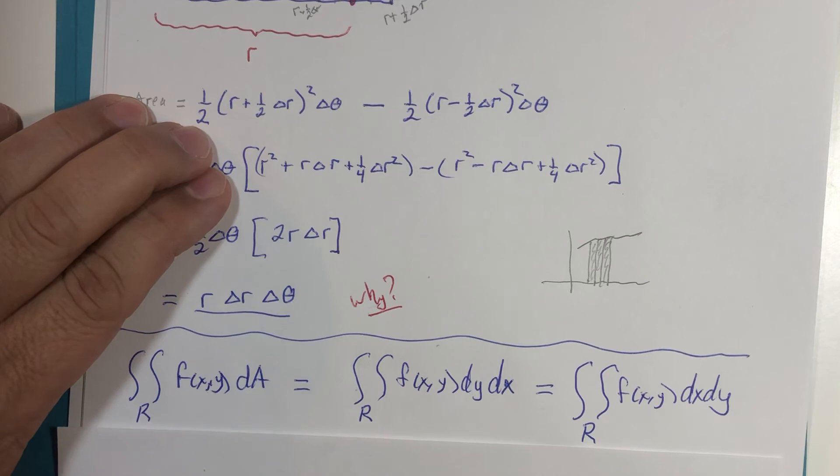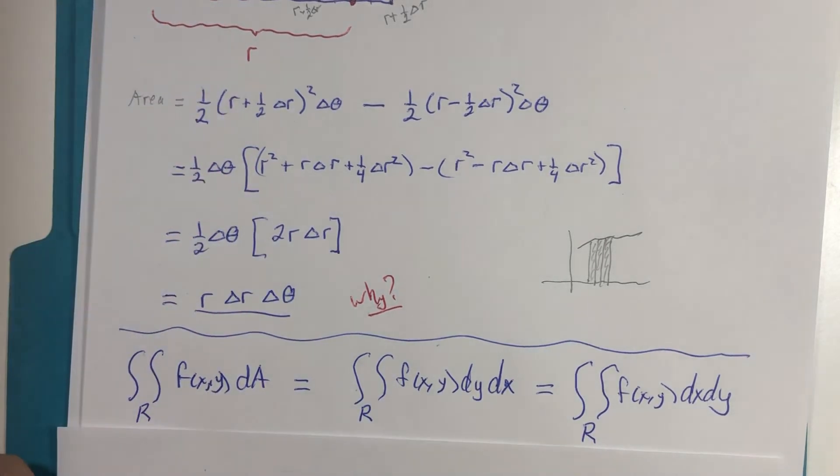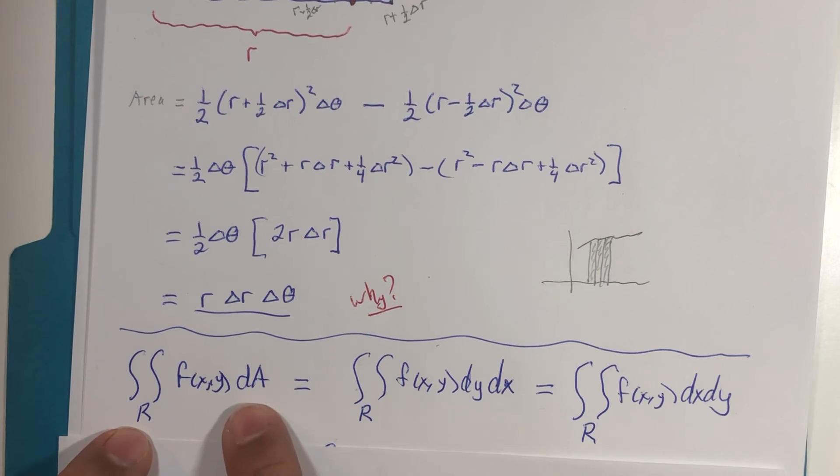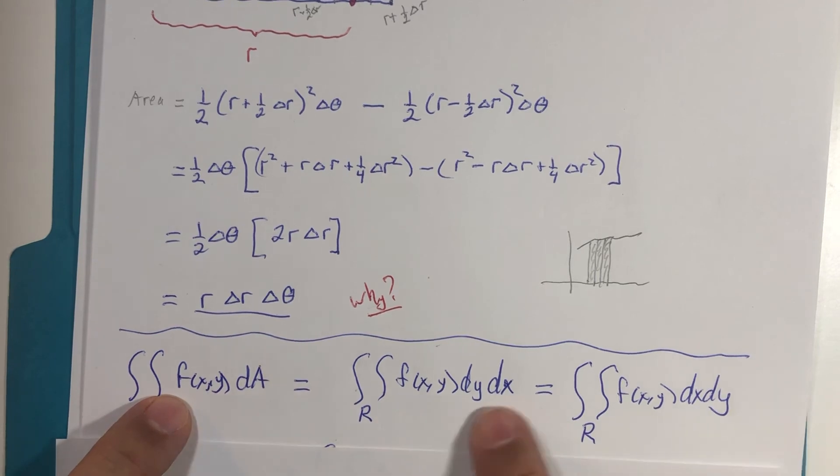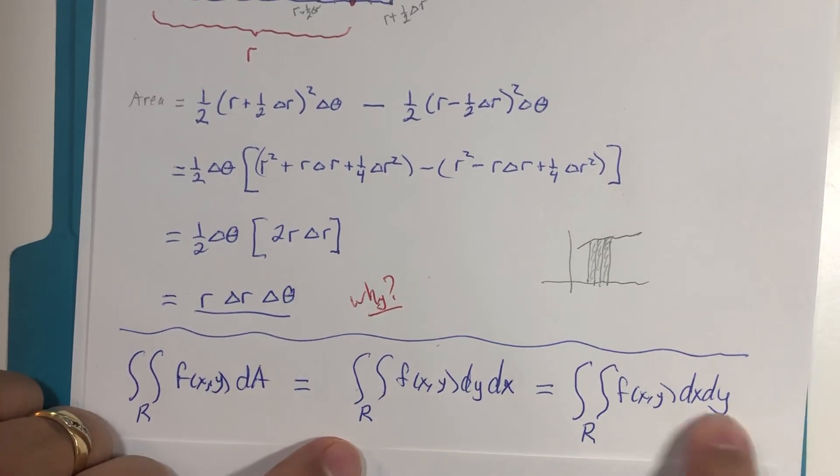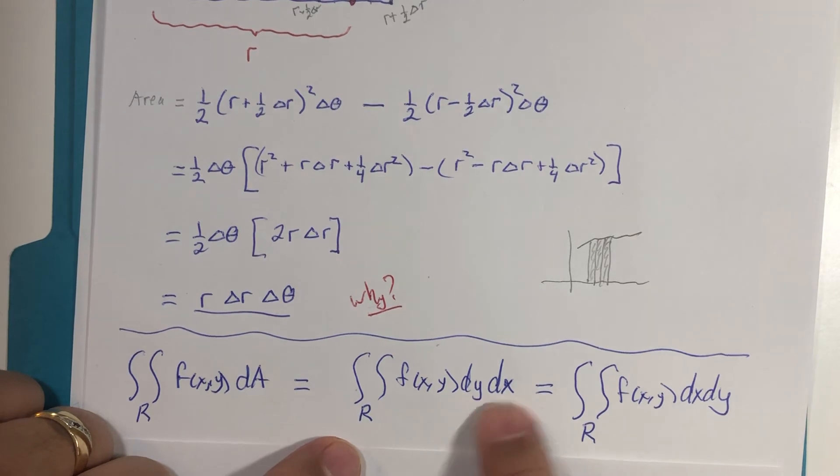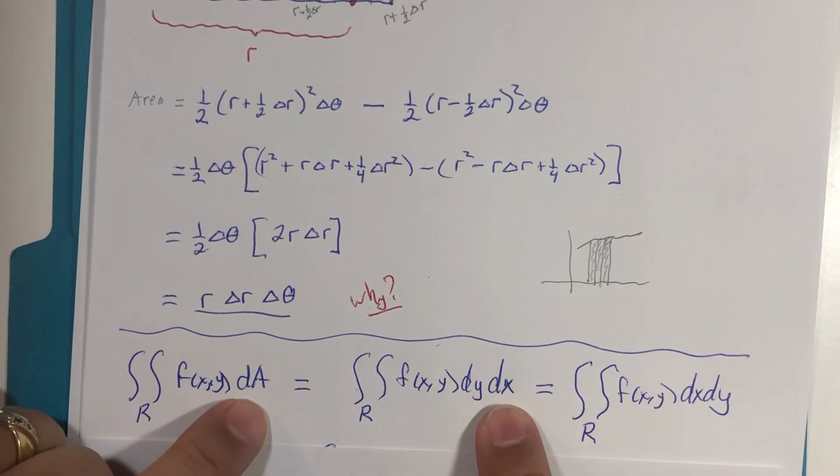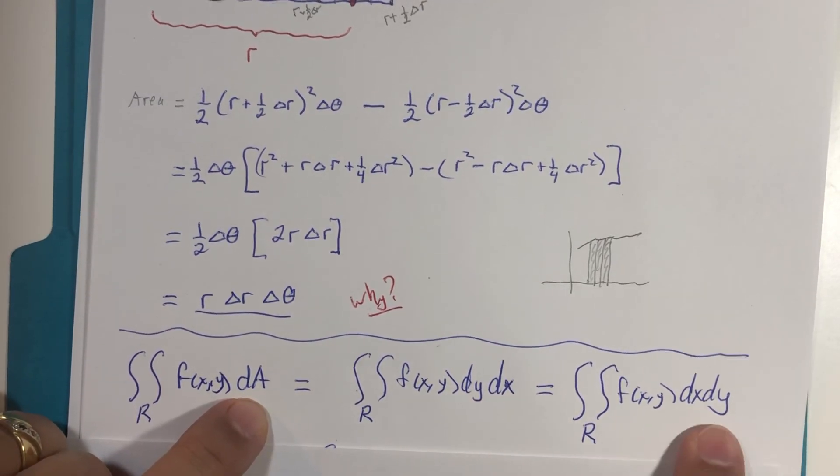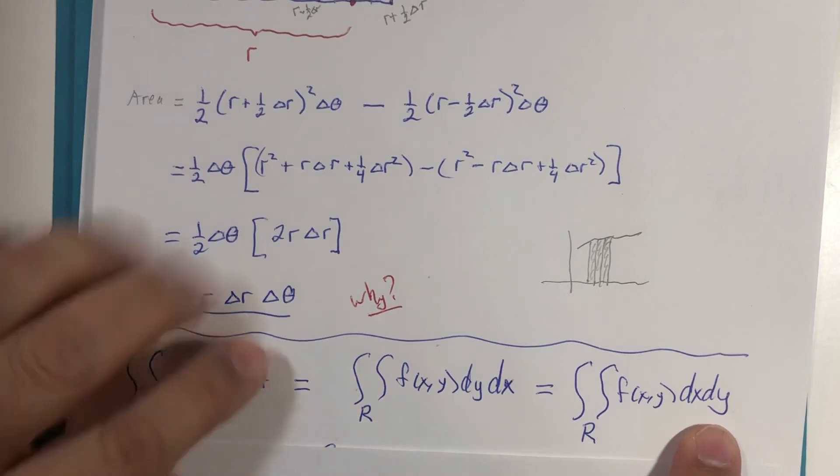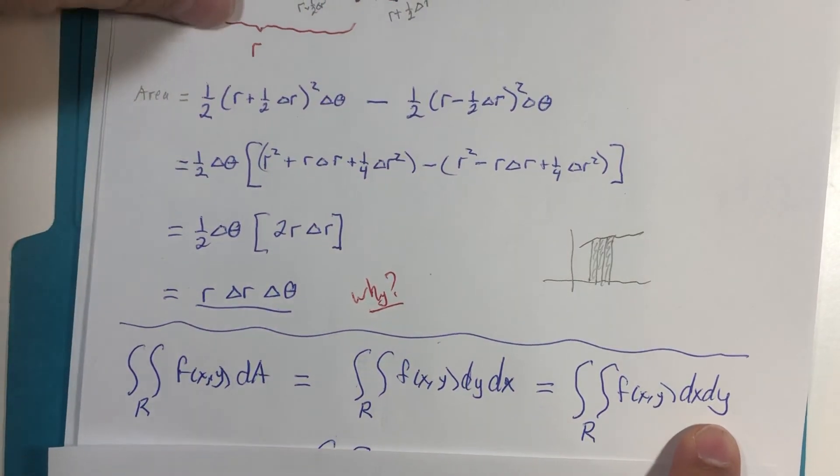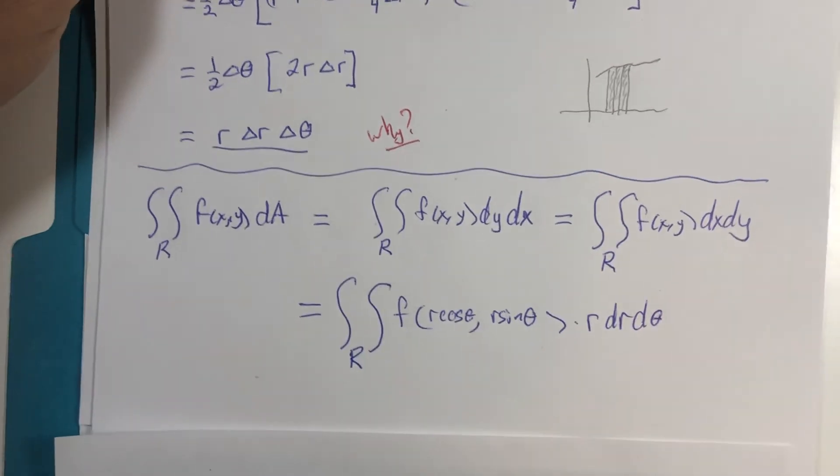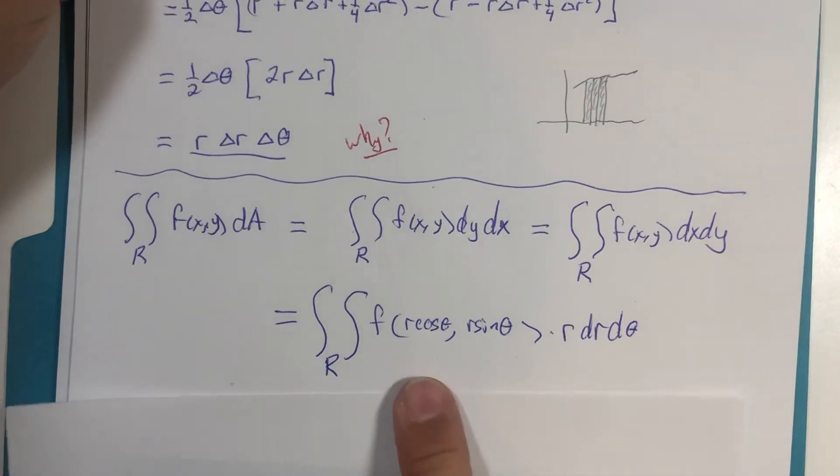Well, we have this notation for the double integral: generic notation I introduced was we have a region and there's an area that we're looking at in this region, and then this is the third dimension above it. We could either measure it dy dx or dx dy—base times height gives us area.